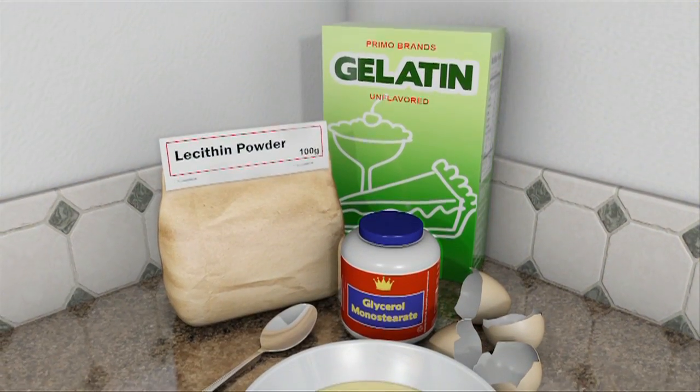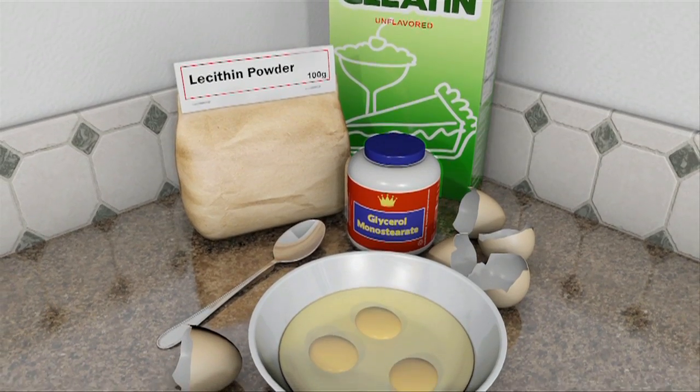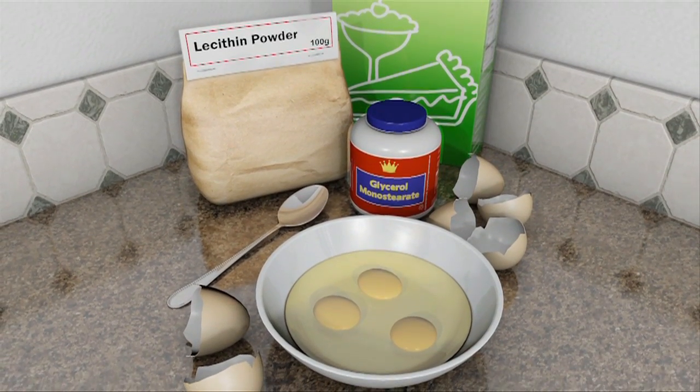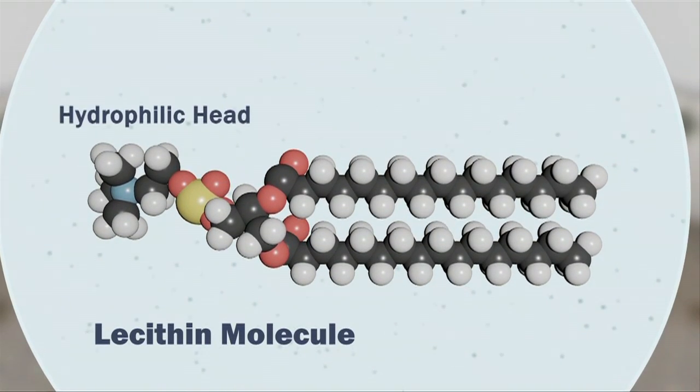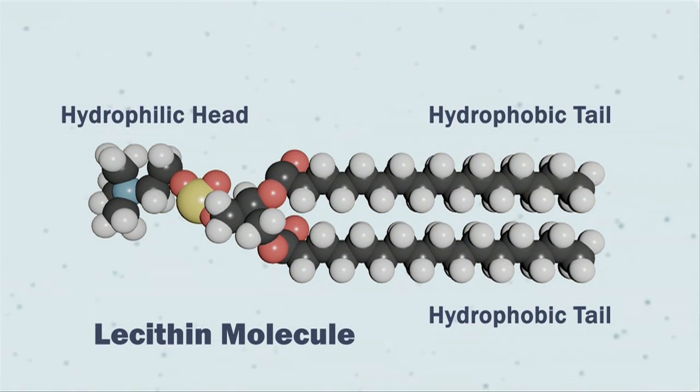There are many emulsifying agents used by chefs. One is the phospholipid lecithin found in egg yolks. Lecithin has a hydrophilic phosphate group and two hydrophobic tails. Most proteins can also be used as emulsifying agents as they are made of amino acids, some of which are hydrophilic and some hydrophobic.